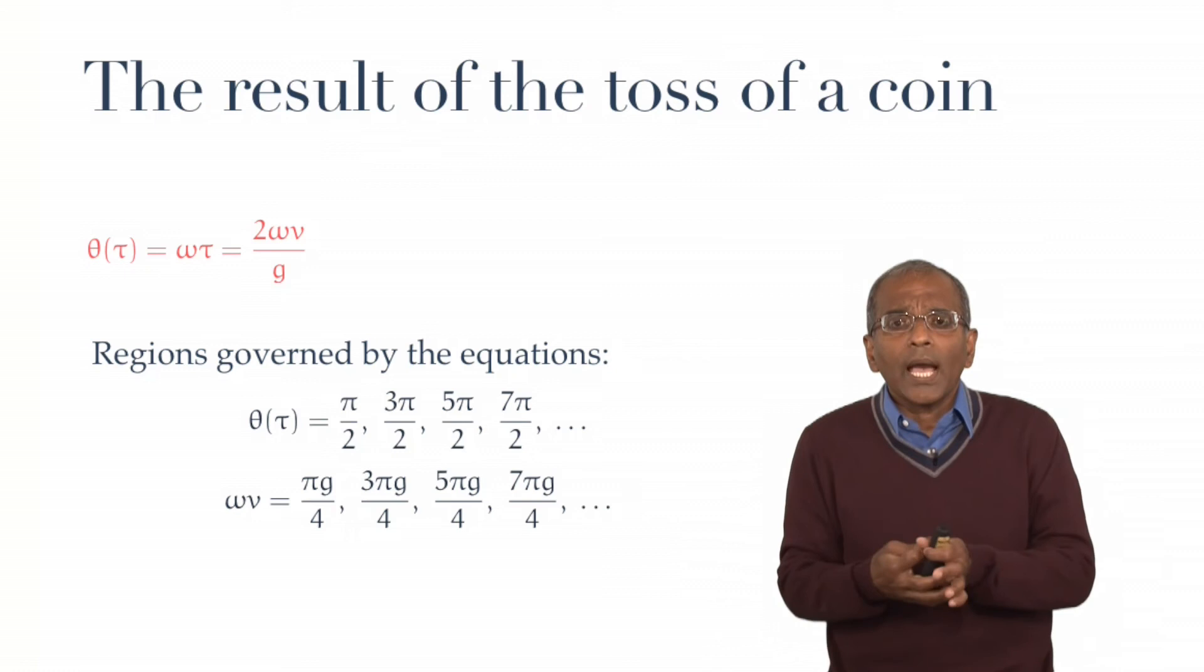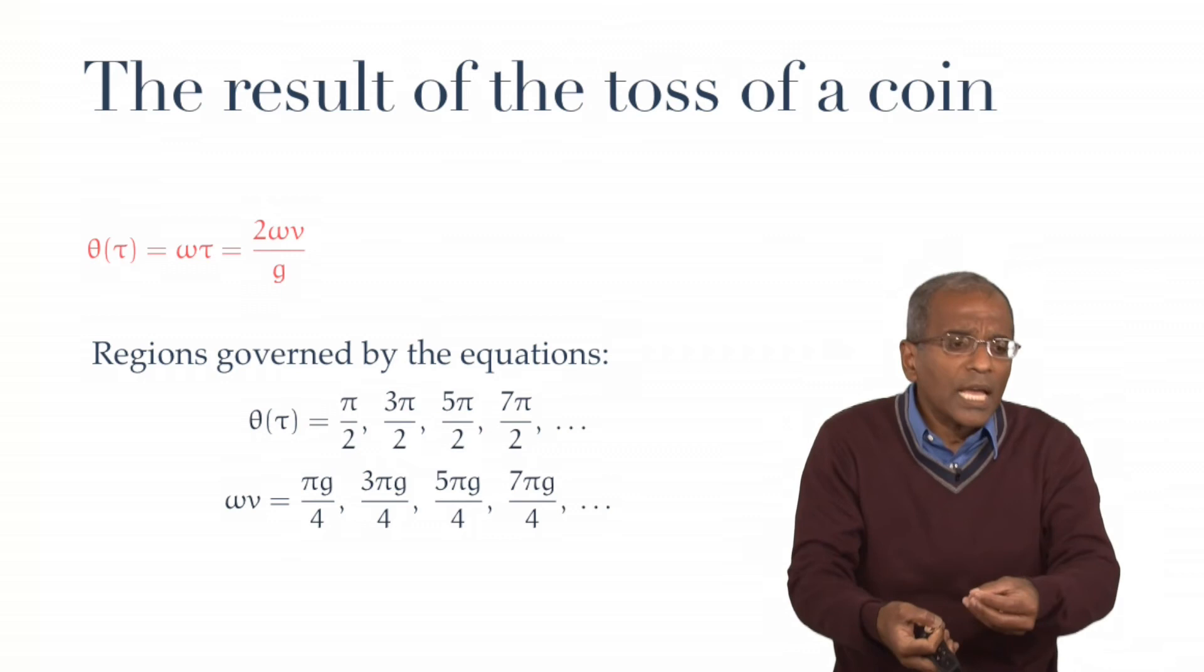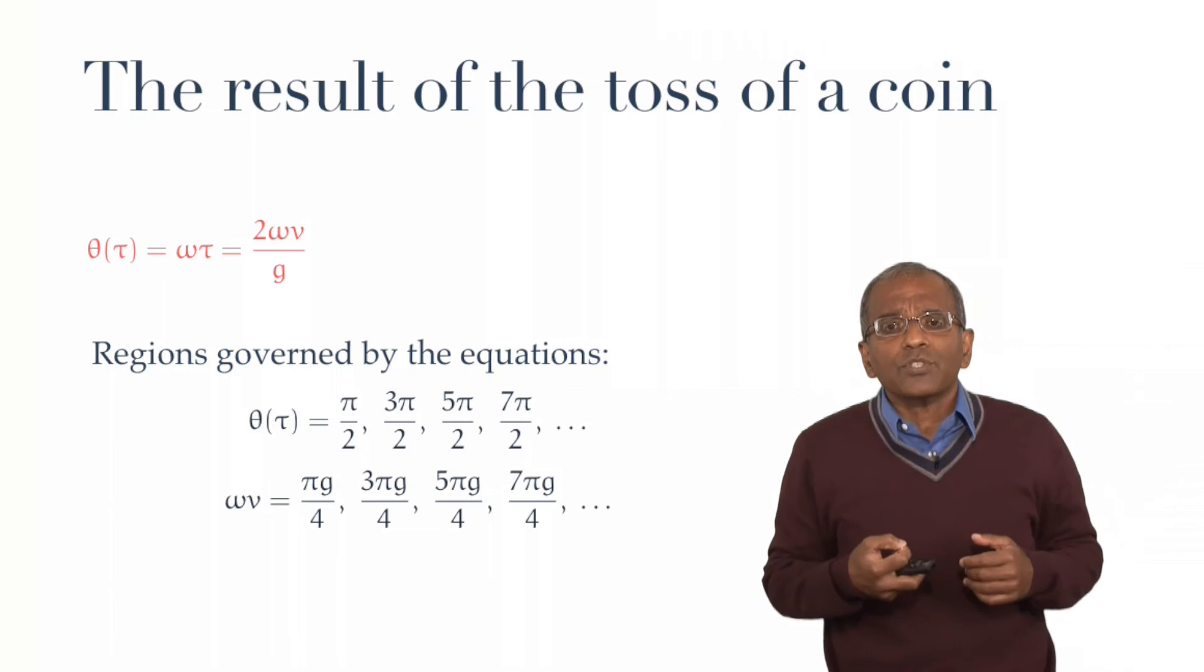If, for example, we have a high velocity and a very small angular velocity, then we will be in the red region beneath the first of your hyperbolic curves. And therefore, the coin will give you a head.